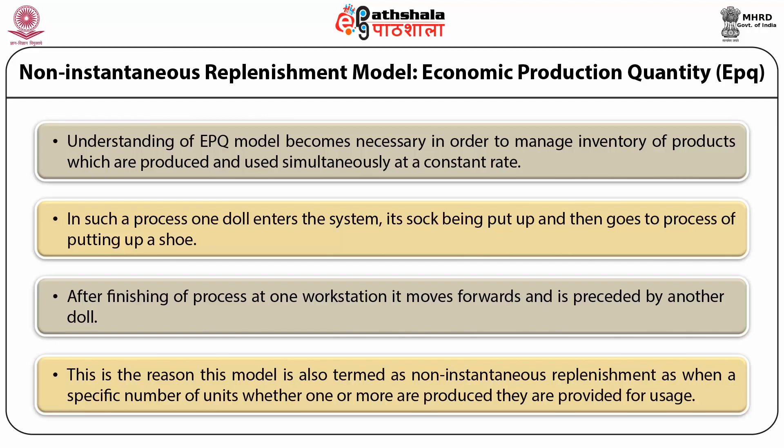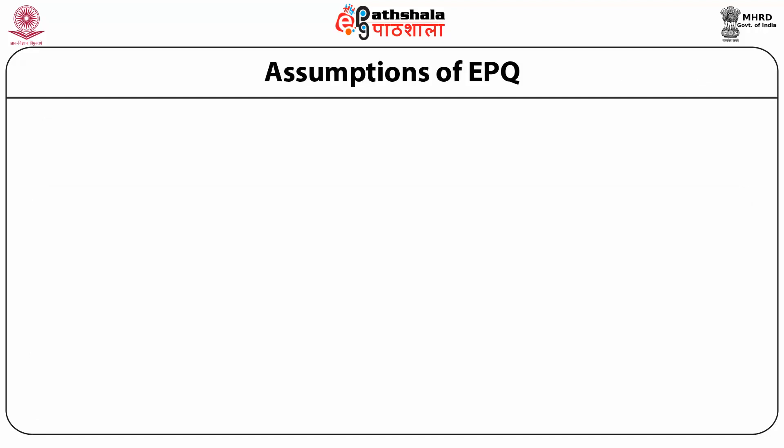This is the reason this model is also termed as non-instantaneous replenishment — when a specific number of units, whether one or more, are produced, they are provided for usage. Out of the produced units, if a few are used, the remaining becomes inventory.